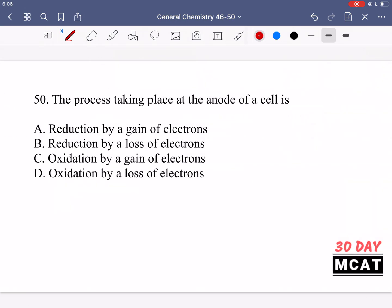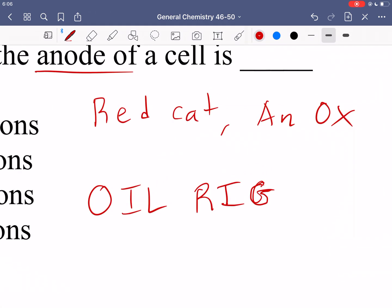In question 50 it says the process taking place at the anode of a cell is blank. So we're talking about the process at the anode. Keep in mind two acronyms: red cat and ox, and also oil rig. We need to know if it's oxidation or reduction and then what those mean.